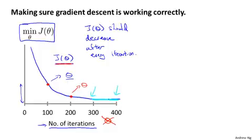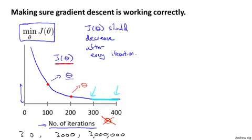By the way, the number of iterations that gradient descent takes to converge for a particular application can vary a lot. For one application, gradient descent may converge after just 30 iterations. For a different application, it may take 3,000 iterations. For another learning algorithm, it may take 3 million iterations. It turns out to be very difficult to tell in advance how many iterations gradient descent needs to converge, and it's usually by plotting the cost function as we increase the number of iterations that I try to tell if gradient descent has converged.